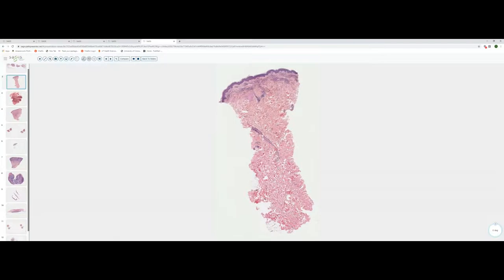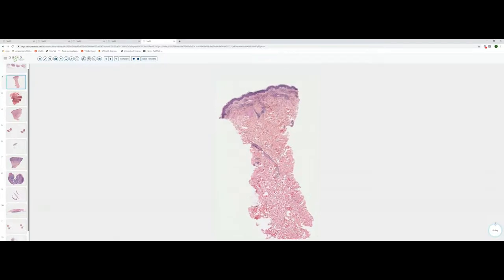Warty dyskeratomas have been reported to occur in the oral mucosa and there are no hair follicles there. So in that instance, it's the change of FAD or focal acantholytic dyskeratosis involving a salivary gland. We'll go ahead and move on to slide two. Slide two was a very skinny punch biopsy. This is from the, probably from the trunk or proximal extremity. The dermis is relatively thick.